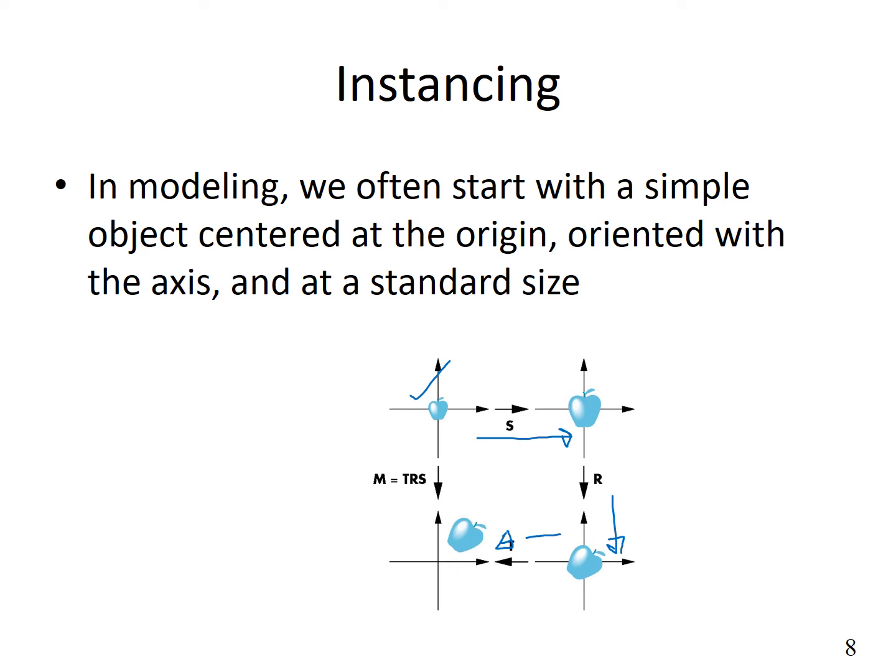We can perform this operation multiple times and create, say, 10 instances of these apples to fill up a basket. We can put all of them at different orientations, scales, and locations. This is called instancing.